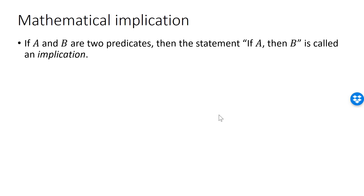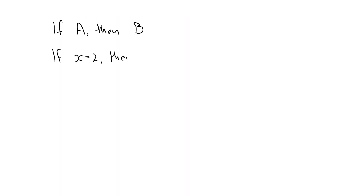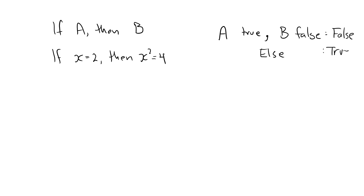We assign a truth value to an implication using the following rule. If the hypothesis a is true and the conclusion b is false, then we say that the implication is false. Otherwise we say that it is true. The truth value of the hypothesis a and the conclusion b depends on the variable, which means that the truth value of the implication depends on the variable. This means that an implication is itself a predicate.